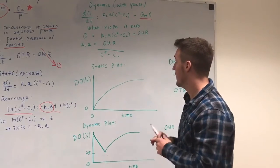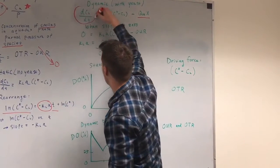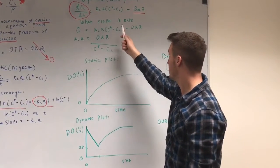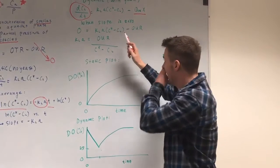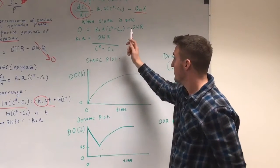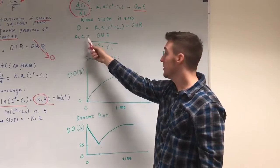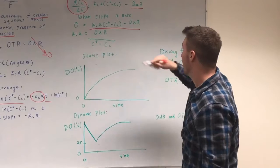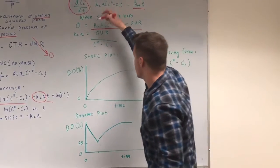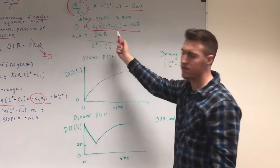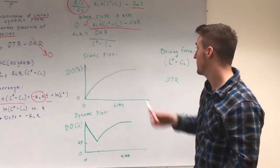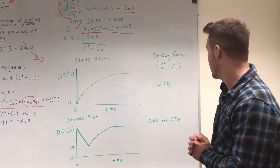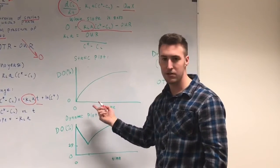For the dynamic method, we find on the plot when dCL/dt equals zero, which occurs when the slope is zero. Under these conditions, the right-hand side of the equation equals zero, and we can solve for KLa by simple algebraic manipulation.